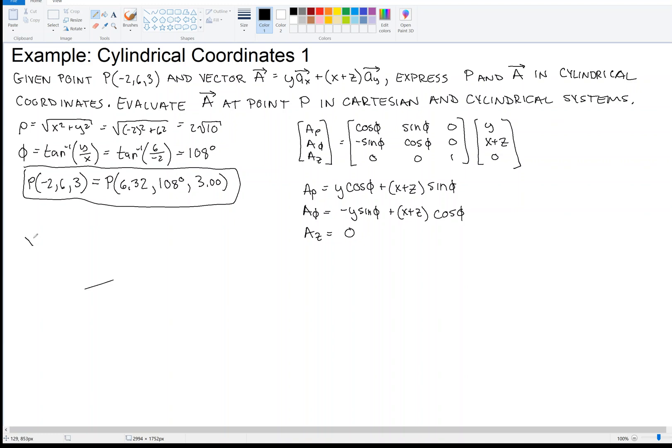Then we recall that x is ρ cos φ, and y is ρ sin φ. So we plug those in here, and we get our vector field A is ρ sin φ cos φ plus (ρ cos φ + z) sin φ. That's the ρ component, A_ρ.